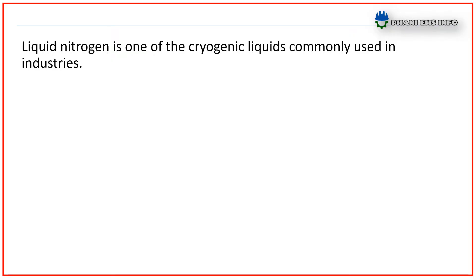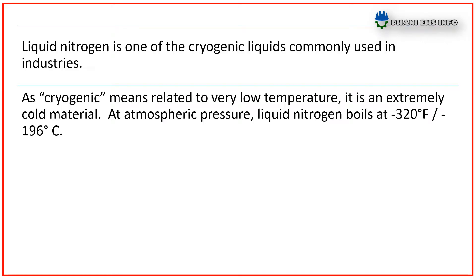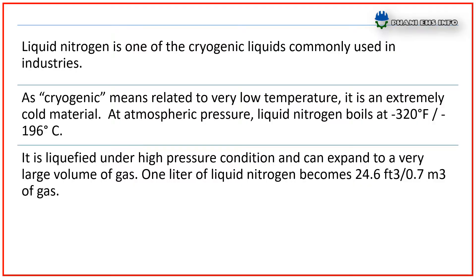Cryogenic means related to very low temperature — it is an extremely cold material. At atmospheric pressure, liquid nitrogen boils at minus 320 degrees Fahrenheit or minus 196 degrees Celsius. It is liquefied under high pressure and can expand to very large volumes of gas.